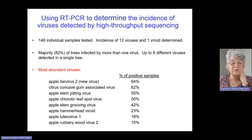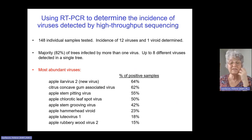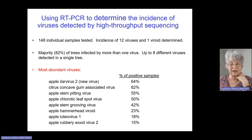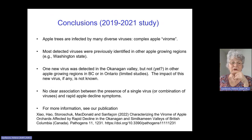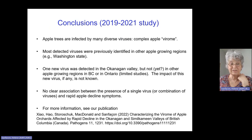In fact, we found up to eight different viruses in a single tree. We then looked at the most abundant viruses, and it was this new virus, Apple RLR virus 2, which was present in the most samples. In addition, we also detected in relatively high incidence other viruses which had been previously described from neighboring apple growing areas — so this was not necessarily a big surprise. The conclusion of the study was that the apple virome is complex: apple trees are infected by many diverse viruses, and most of the viruses we detected were previously identified in other apple growing regions.